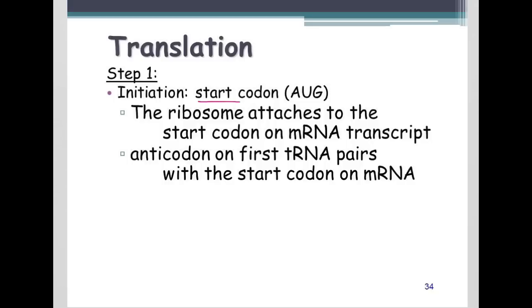Step one, initiation. We always start at our start codon, AUG, which always codes for the amino acid methionine. I don't expect you to memorize the genetic code. We will give you a codon chart to use on any given test. However, we do expect that you know that AUG codes for methionine and that it is always the start codon.